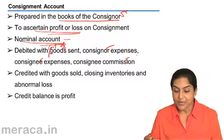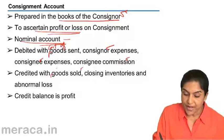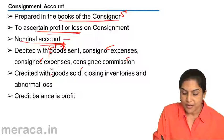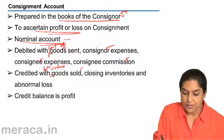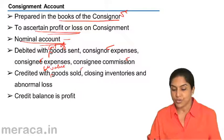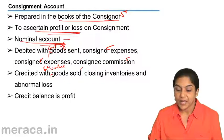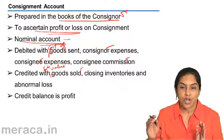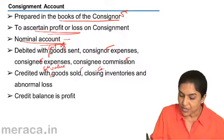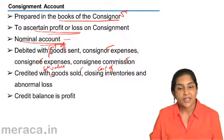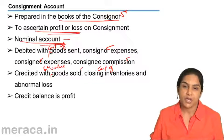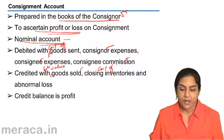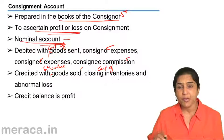The consignment account is credited with the sale value of the goods sold. It is also credited with the closing stock — the cost of unsold stock — and with abnormal loss, if any.